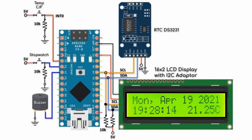Displayed on the LCD screen we have the date, time, and the temperature in Celsius. Pressing the interrupt button will toggle the temperature from Celsius to Fahrenheit and vice versa.